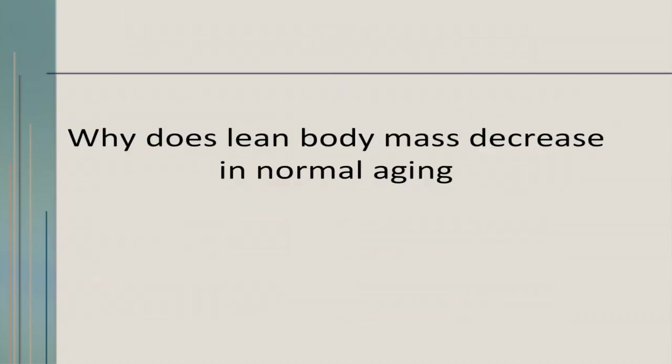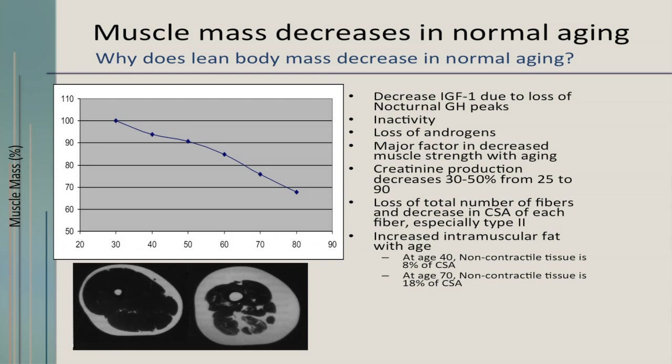Why does lean body mass decrease with normal aging? Looking at this decline on the graph and the MRI of the muscle, there's a decrease in IGF-1, you lose androgen, creatine production decreases, and you lose the total number of fibers especially type 2. Fat creeps into the muscle — the white part on the picture is fat, and the actual muscle mass decreases. Exercise, however, can overcome this regardless of age.